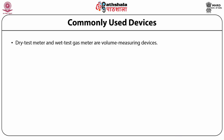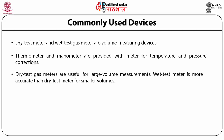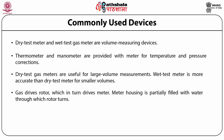The dry test meter and the wet test gas meter are volume measuring devices. In the dry test meter, a set of plastic bellows is alternately filled and emptied, thereby driving the dial pointer, while a system of valves requires very little pressure. A thermometer and manometer are provided for temperature and pressure correction. Dry test gas meters are useful for large volume measuring. The wet test meter is generally more accurate than the dry test meter for smaller volumes; the gas drives a rotor which in turn drives the meter, and the meter housing is partially filled with water through which the rotor turns.